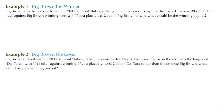Now, odds can be written as a fraction, A over B. But often they're translated as A to B — it's A, colon, to B. And the creative thing about odds is they can express a monetary payout when you bet.